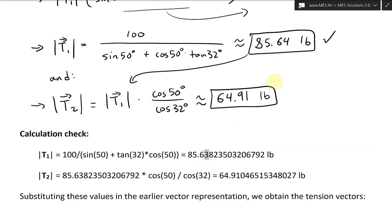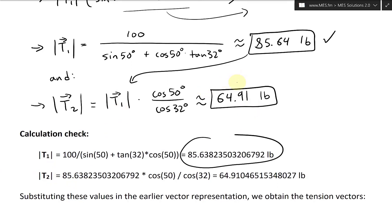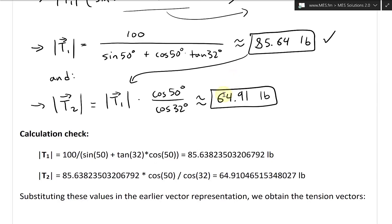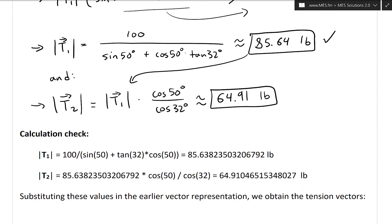For T2: take the T1 value and multiply by cosine50°/cosine32°, which gives 64.910. Rounds to 64.91. Calculation has been checked.